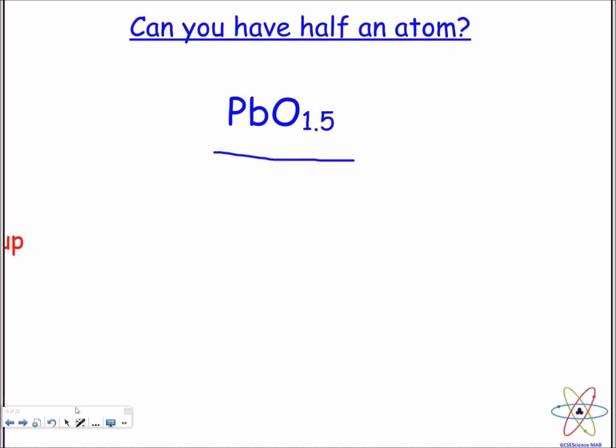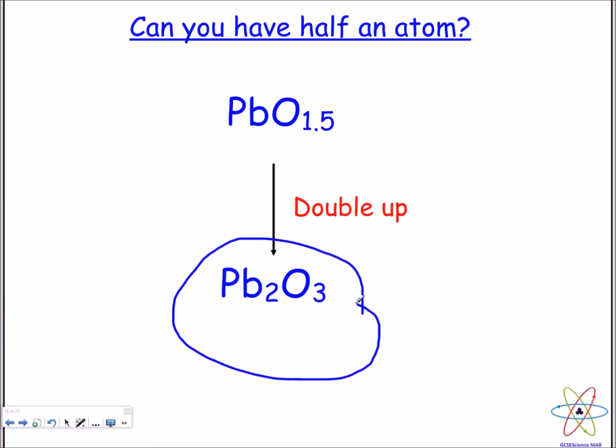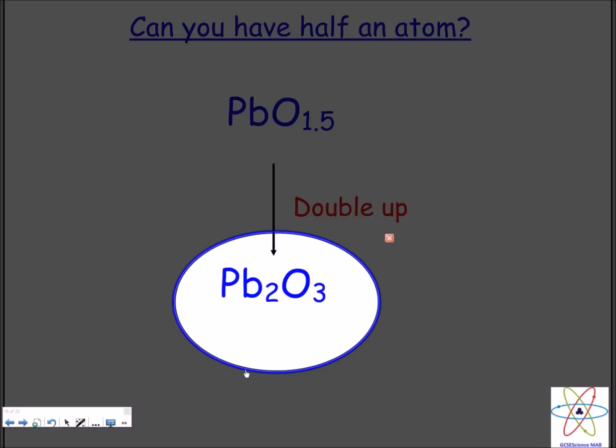Now the answer to that question is no, because if you remember what I said in the beginning, empirical formula has to be a whole number. So to solve this we just double up this molecule or multiply it by 2. So our final formula is Pb2O3 and that is our empirical formula.